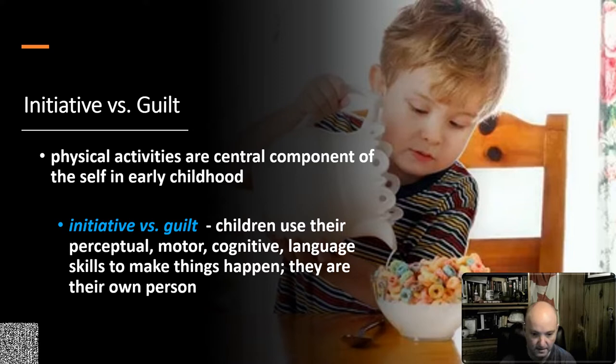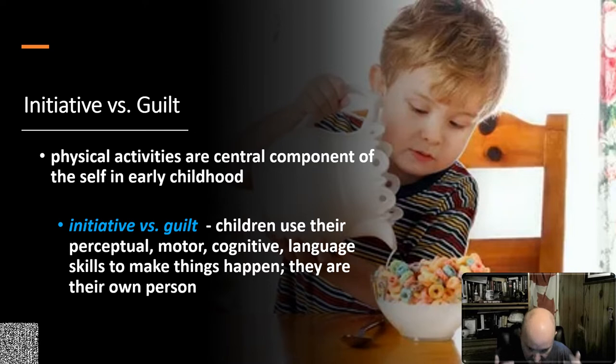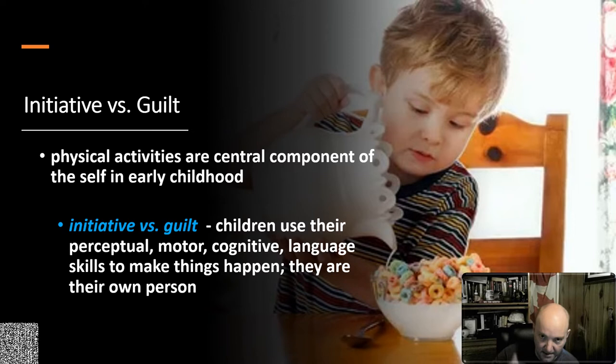By early childhood, children use their perceptual, motor, cognitive, and language skills to make things happen and become more convinced that they're their own person. It's not like in their mind they're consciously thinking, 'I made this thing out of blocks, I must be more of my own person.' It's way more psychodynamically deep than that.